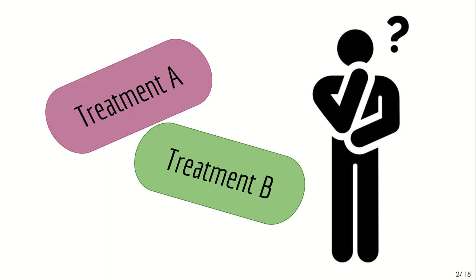This treatment effect is generally estimated to be the same for all patients, which is obviously not always the case. What we already do is sometimes perform subgroup analyses — for example, checking if there's a different treatment effect in men versus women — but that's driven more by regulatory requirements than by what the data tells us. This talk is about turning that around and asking the data whether there are any differences between patients' treatment effects.